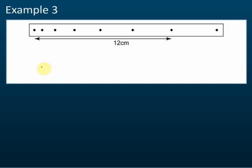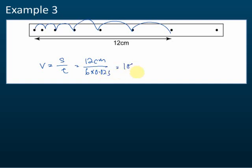Velocity equals displacement divided by time. The displacement is 12 cm, and the time taken is 6 ticks: 6 multiplied by 0.02 seconds equals 0.12 seconds. So the velocity is 12 divided by 0.12, which equals 100 cm per second.